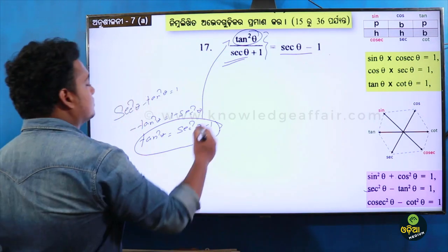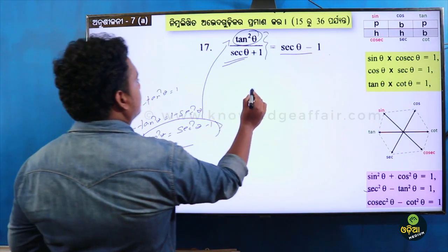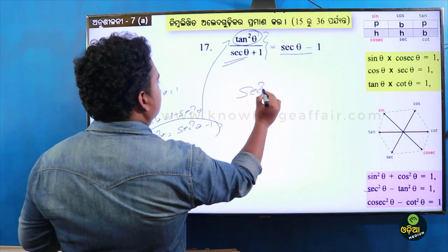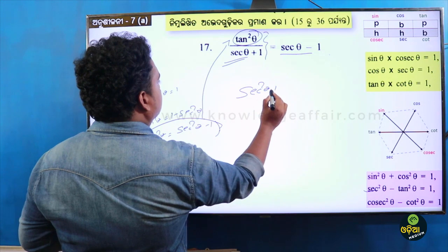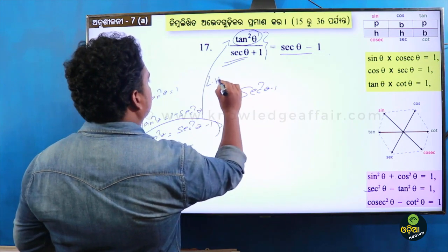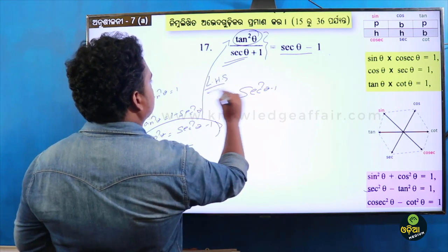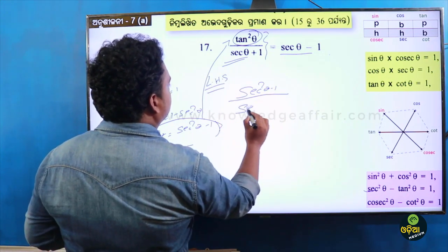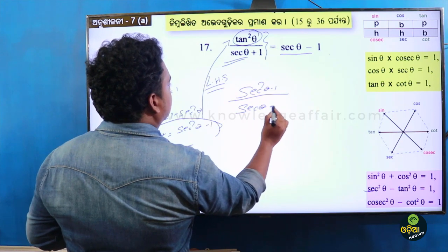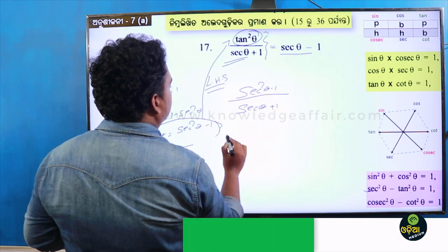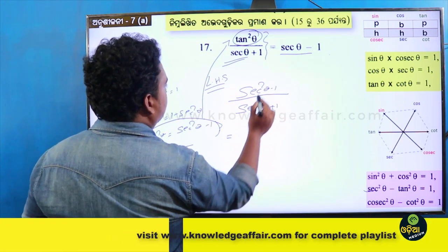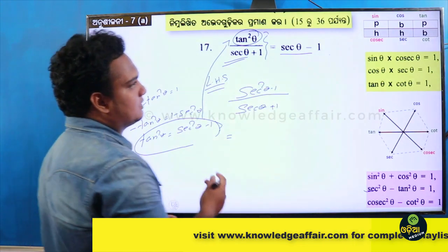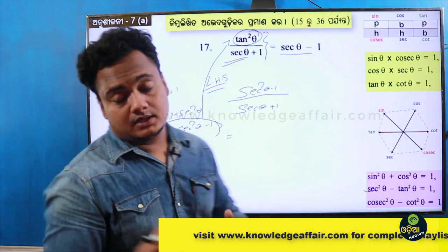So we put tan squared theta as sec squared theta minus 1. We get sec squared theta minus 1 divided by sec theta plus 1.